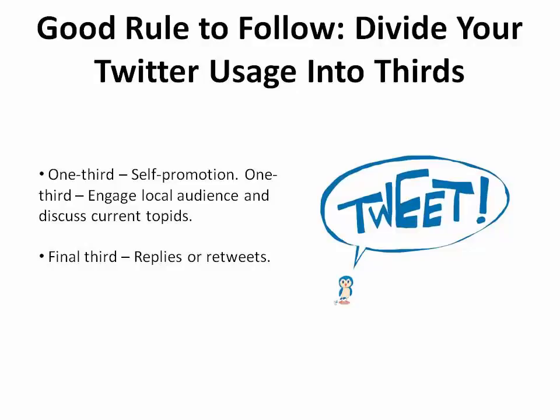One third of your activity should be links and self-promotion. Another third should be tweets that engage your local audience, such as discussing current topics in your local area. The final third should be replies or retweets. Engage local businesses and Twitter accounts — reply to their tweets or retweet some of their tweets to your followers.